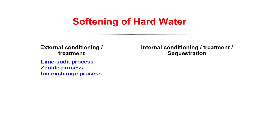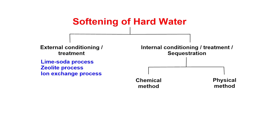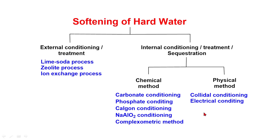External conditioning methods are: lime soda process, zeolite process, and ion exchange process. Internal conditioning involves chemical methods and physical methods. Chemical methods include carbonate conditioning, phosphate conditioning, chalgone conditioning, sodium aluminate conditioning, and complexometric method. Physical methods include colloidal conditioning and electrical conditioning.